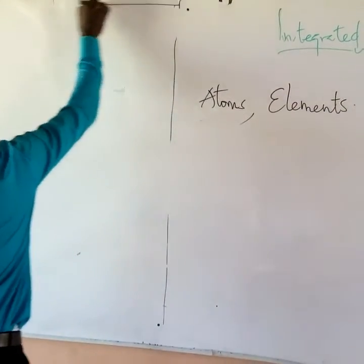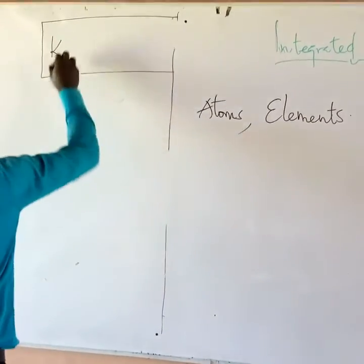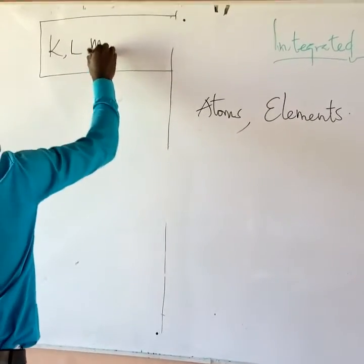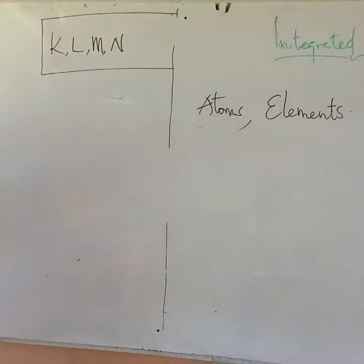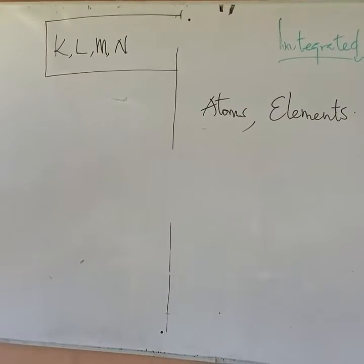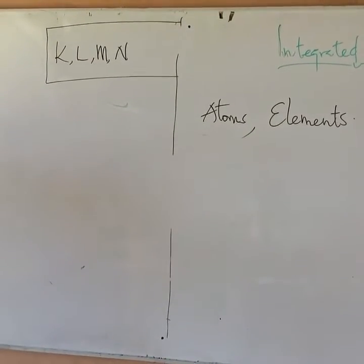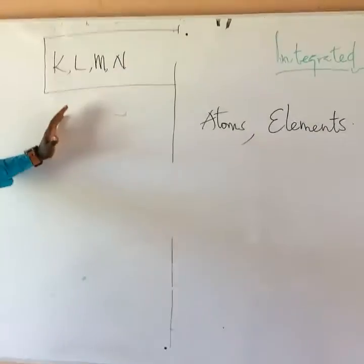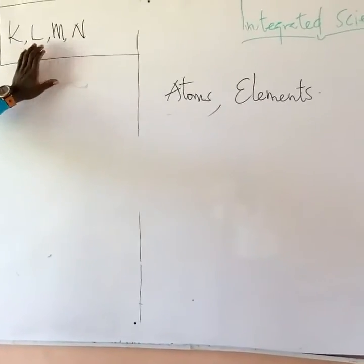When I say principal quantum numbers, they are the K shell, the L, the M, and the N. These are the principal quantum numbers — the main shells on which electrons are found. So any element that we are going to draw for the first 20 elements, we will be arranging the electrons under these shells.